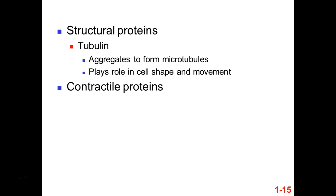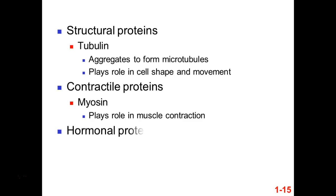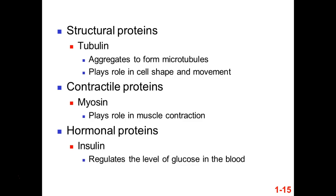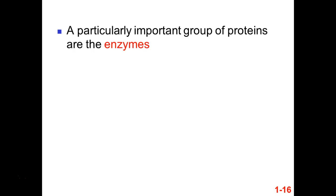Contractile proteins like myosin make muscle contraction possible. Hormonal proteins like insulin regulate how our bodies take up glucose from the bloodstream when it's present. A large majority are functional proteins that catalyze reactions in our bodies and cells — enzymatic proteins.